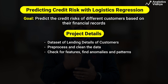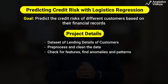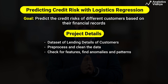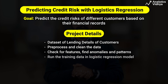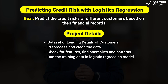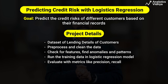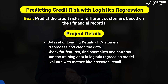We check for different features and find anomalies and patterns, then choose the most relevant features to work with. We split the dataset into training and testing and run the training data in a logistic regression model. Once your model is ready, you can evaluate it using various metrics. This project will help you determine the credit risk of each customer.